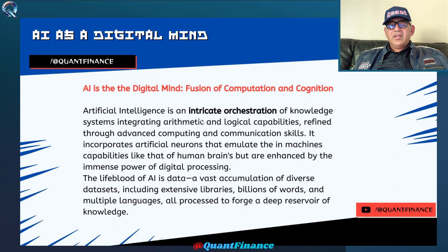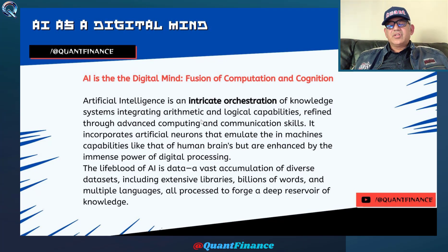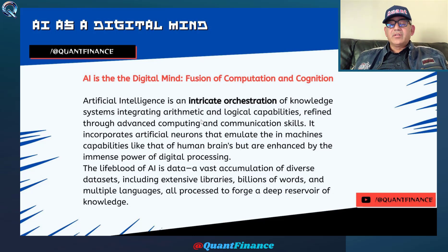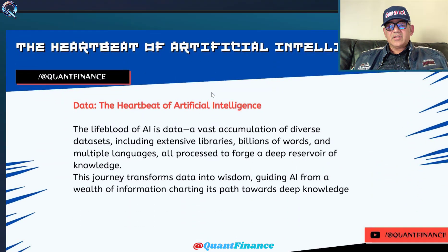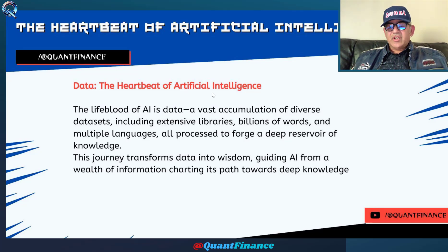If you want to understand artificial intelligence, we can treat it more like a digital mind. Artificial intelligence is an intricate orchestration of knowledge systems that integrate arithmetic and logical capabilities, refined through advanced computing and communication skills. It incorporates artificial neurons through neural networks that emulate human-like capabilities and immense digital processing power. In short, you can view artificial intelligence as a digital mind.